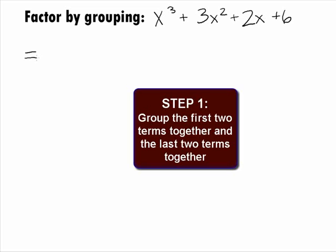In Step 1, we need to group together the first two terms and then the last two terms. So, our first parentheses will have x cubed plus 3x squared, and in our second parentheses, we'll have 2x plus 6.